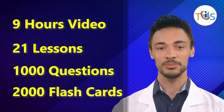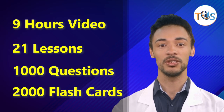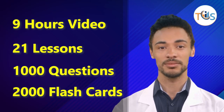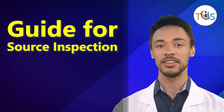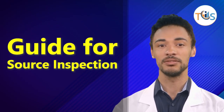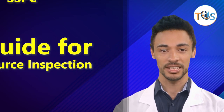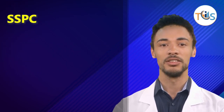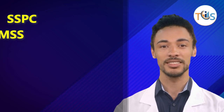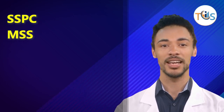The API Source Inspector Rotating Equipment Training Course covers the Guide for Source Inspection and Quality Surveillance of Rotating Equipment, the SSPC Surface Preparation Guide, and the MSS Quality Standard for Steel Castings.